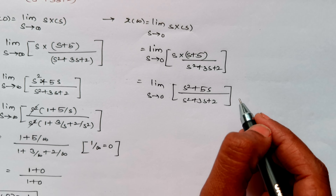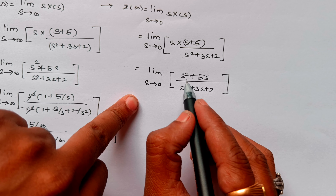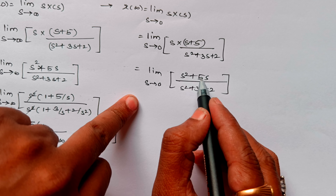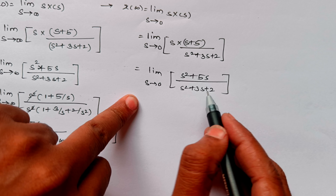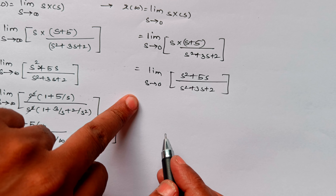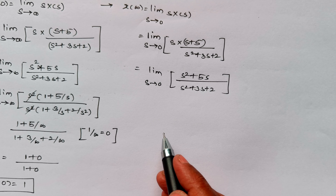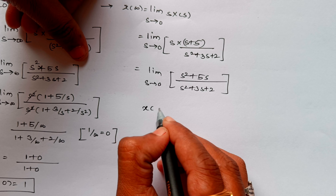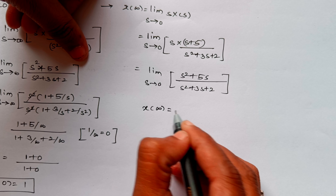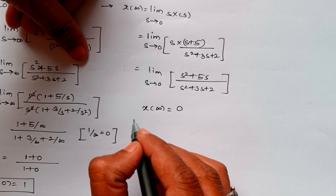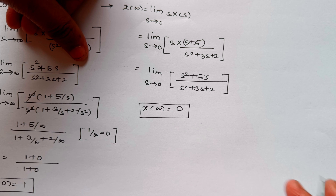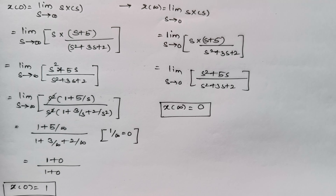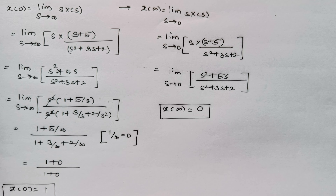Now directly applying the limit as s tends to 0: the numerator gives 0+0 = 0, and 0 divided by anything gives 0. So we get x(∞) as 0. We got both values: initial value as 1 and final value as 0.